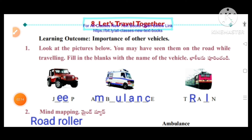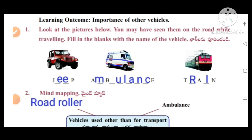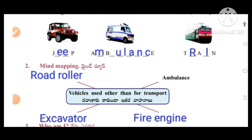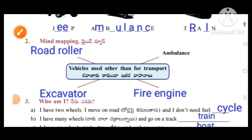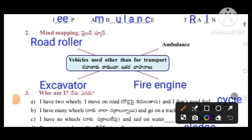Learning outcome: importance of other vehicles. You may have seen them on the road while traveling. Fill in the blanks with the names of the vehicles: jeep (J-E-E-P), ambulance (A-M-B-U-L-A-N-C), train (T-R-A-I-N). Mind mapping — vehicles used other than transport: road roller, ambulance, fire engine, excavator.